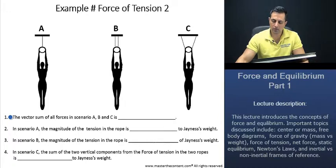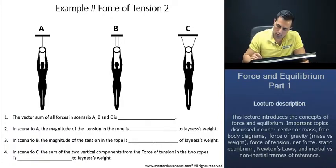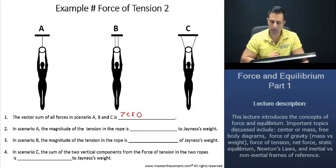Well, the vector sum of all forces, because Janus is going to be at rest, we know that is, and the forces are going to be balanced, and the vector sum is going to be 0. Wonderful.